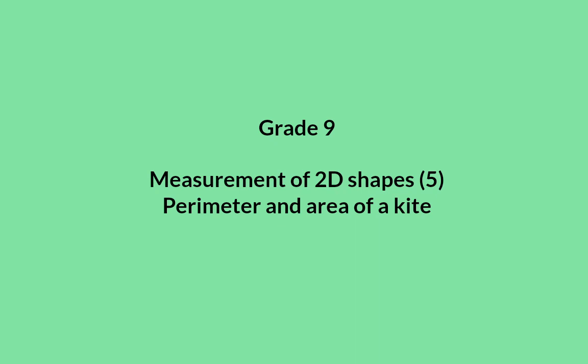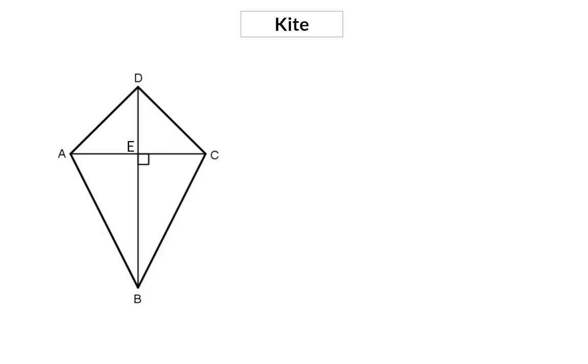In this video we see how to determine the perimeter and area of a kite. A kite is a quadrilateral where two pairs of adjacent sides are equal in length, the diagonals intersect at 90 degrees, and one diagonal is bisected by the other.